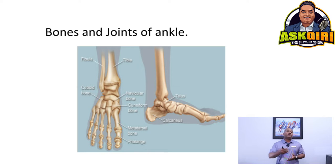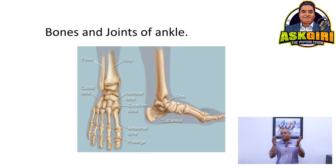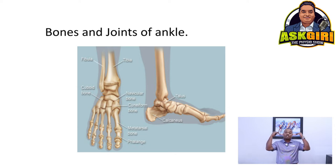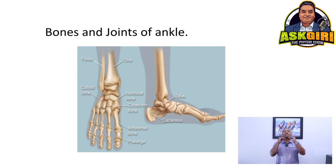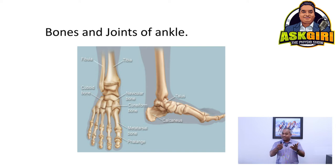The ankle and foot contain 33 joints and about 26 bones — imagine how many tiny ligaments connect them. It's a wonderful architecture. We have a medial arch, a lateral arch, and a transverse arch. The arches communicate with each other; the bones form the arch while the tendon slings maintain it, like a capstone in the middle.